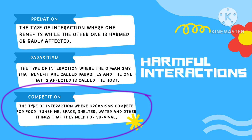The third harmful interaction is what we call competition. It is the type of interaction where organisms compete for food, sunshine, space, shelter, water, and other things that they need for survival. Competition naman ay tumutukoy sa interaction ng bawat organisms na kung saan sila ay nagkokumpitensya para sa mga pangangailangan nila upang sila ay mabuhay.